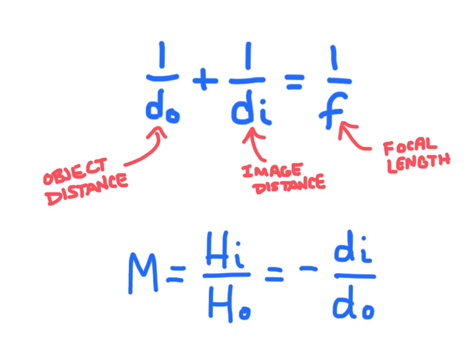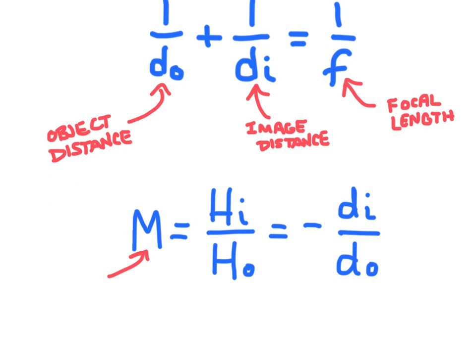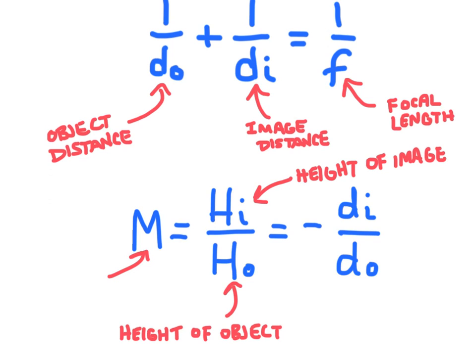And then the magnification M right here is a ratio that compares the height of the image H_i to the height of the object H_o. And magnification can be solved two ways. We can use the height of the image and object or the distance of the image and distance of the object.